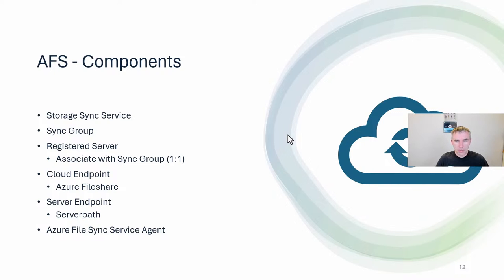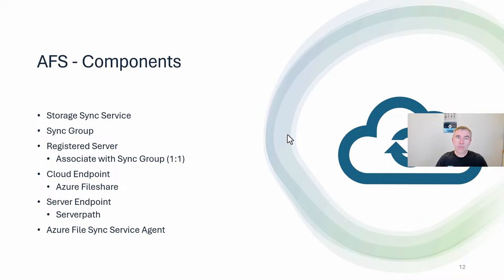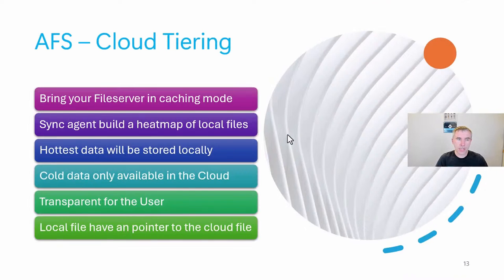Here are the components in a short overview. You need the Storage Sync Service, which you enroll in Azure. Then you create a Sync Group — a synchronization group where you register all the servers that will synchronize their files through it. One important note: you can only associate one server to one sync group. It's not currently possible for a server to be part of more than one sync group. You also need the Cloud Endpoint, which is the Azure File Share itself.